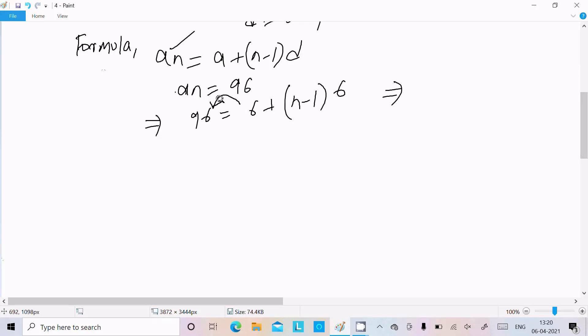So here we can write a + (n-1) × d. Write an value 96, a value 6 plus (n-1), d is also 6, common difference is also 6. From here calculate n value.